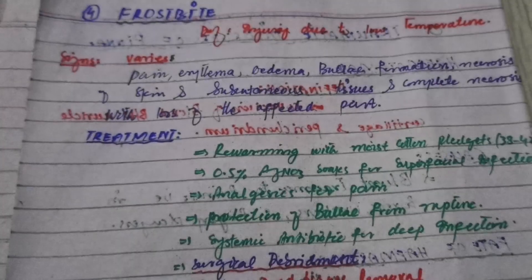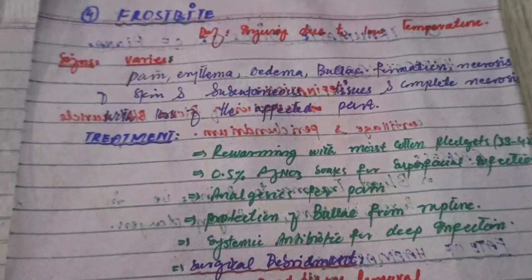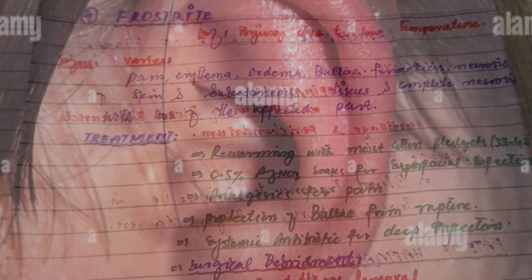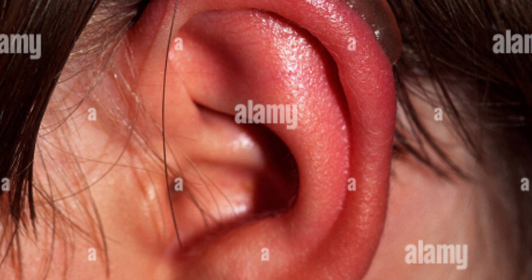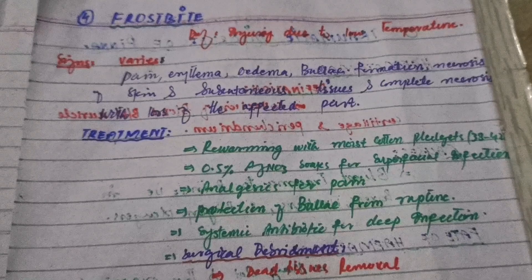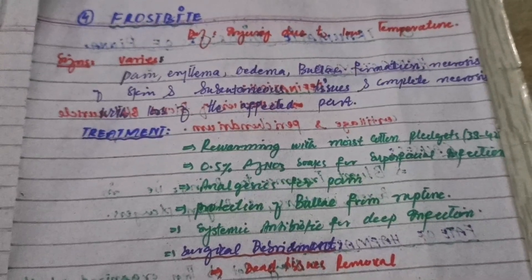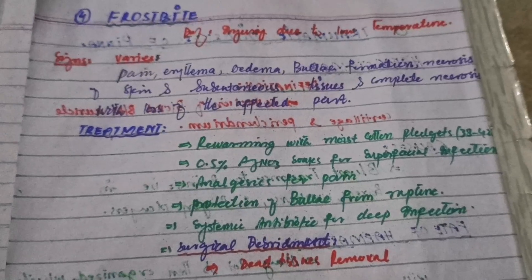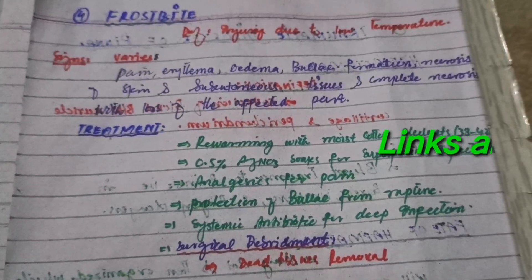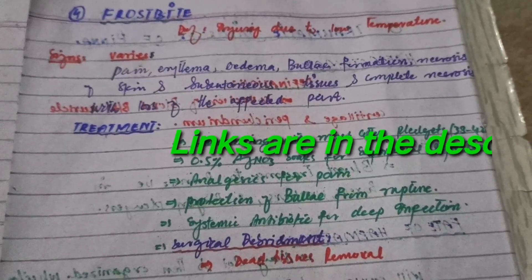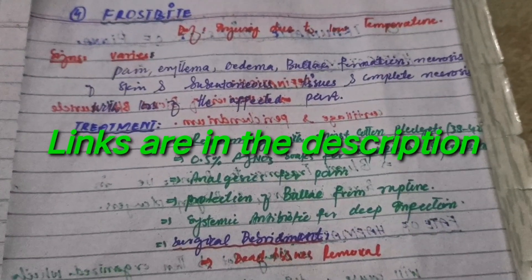Assalamu alaikum everyone, welcome to my channel Medical Lectures and Mnemonics. Today I'm going to talk about the frostbite injury of the auricle. In the previous few videos, I have already talked about the congenital anomalies of the auricle, the evolution of the auricle, and the anatomy of the auricle. You can find the links to those videos in the description.